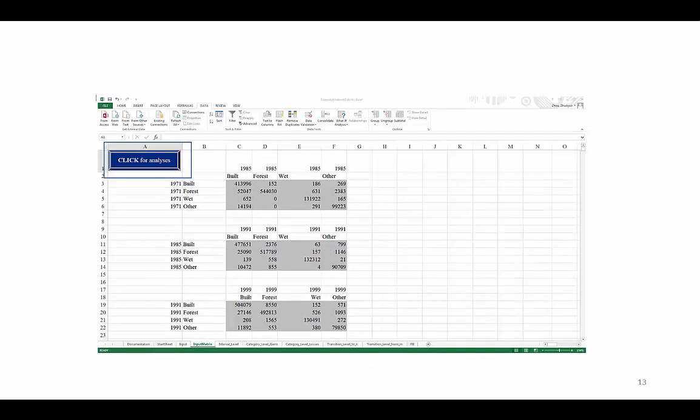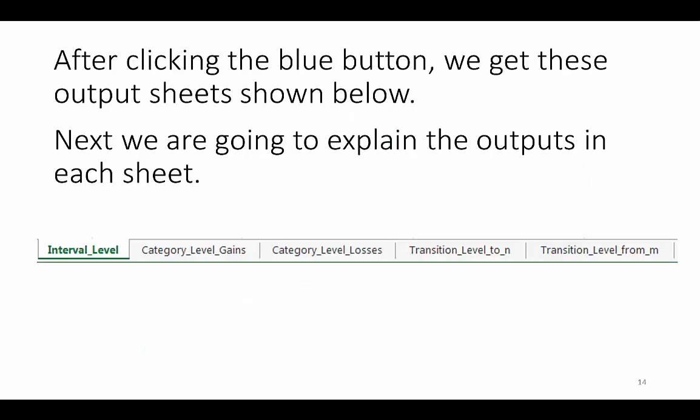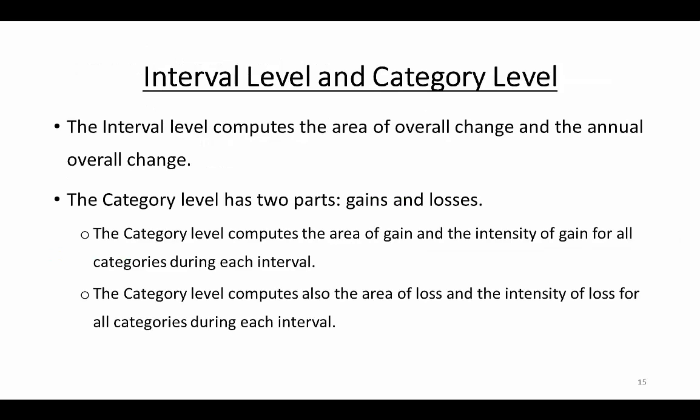Let's click the blue button for the calculations to begin. The computer program writes the results to these five output sheets. We will use examples from the Odwake and Panias paper to explain these outputs for each level of analysis. The interval level of intensity analysis is the first level of analysis. It computes the area of overall change and the annual overall change. The category level is the second level of analysis. It has two parts, gains and losses. The category level computes the area of gain and the intensity of gain for all categories during each interval.